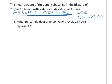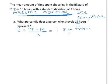Let's say we wanted to figure out what percentile a person who shovels 19 hours represents. The first thing we need to do is translate this into number of standard deviations. 19 doesn't mean anything by itself — what matters is how many standard deviations it is from 16. That's our z-score. So we do 19 minus our mean of 16, all over our standard deviation of 3, which comes out to be 1. So we're one standard deviation from the mean.